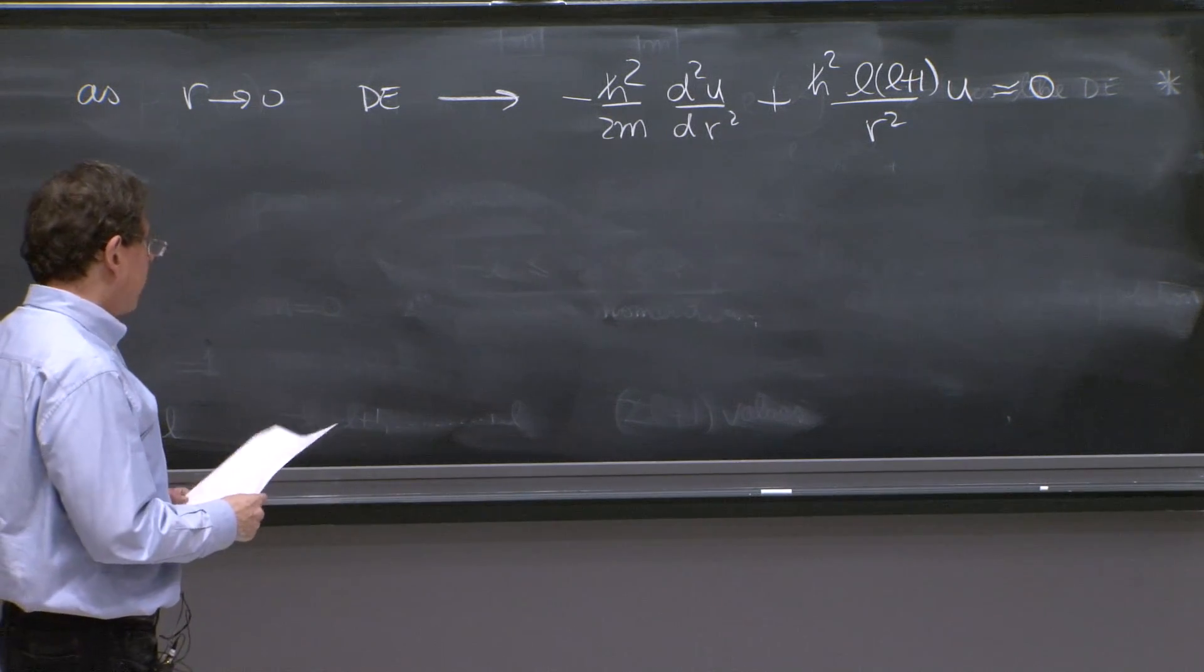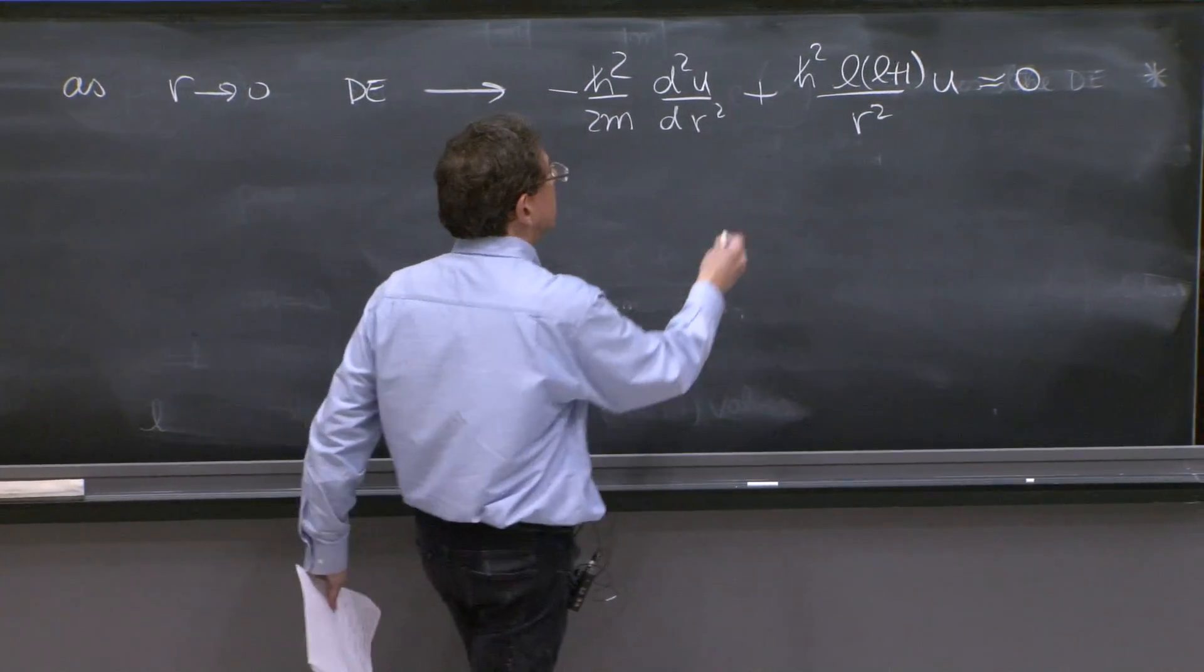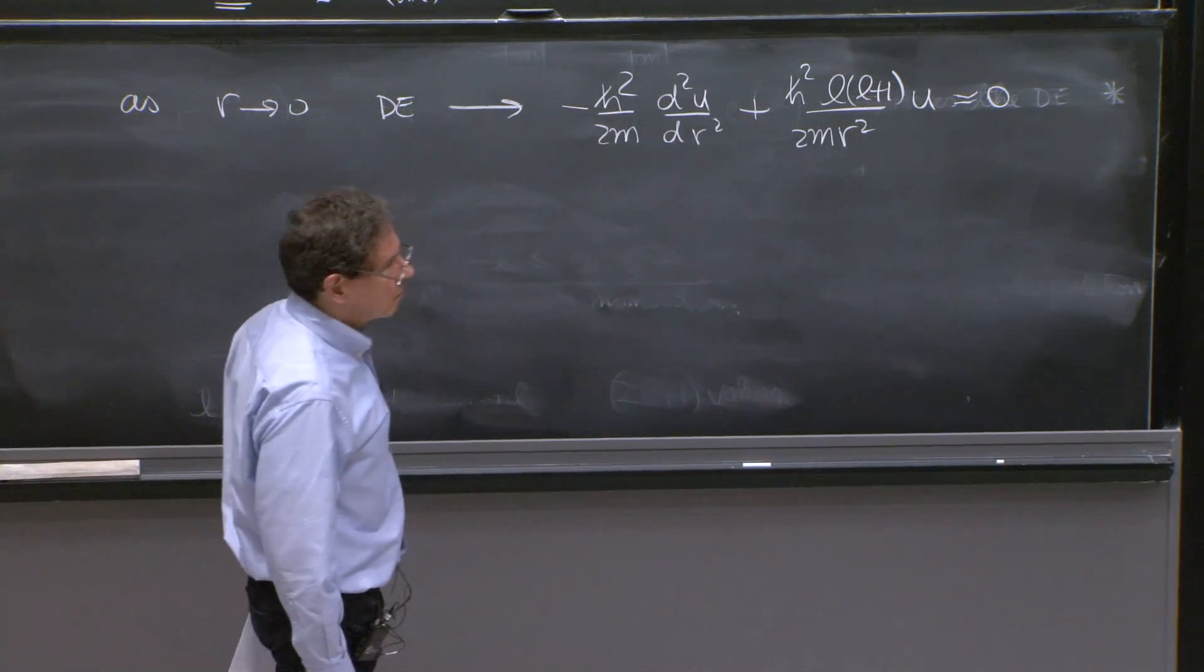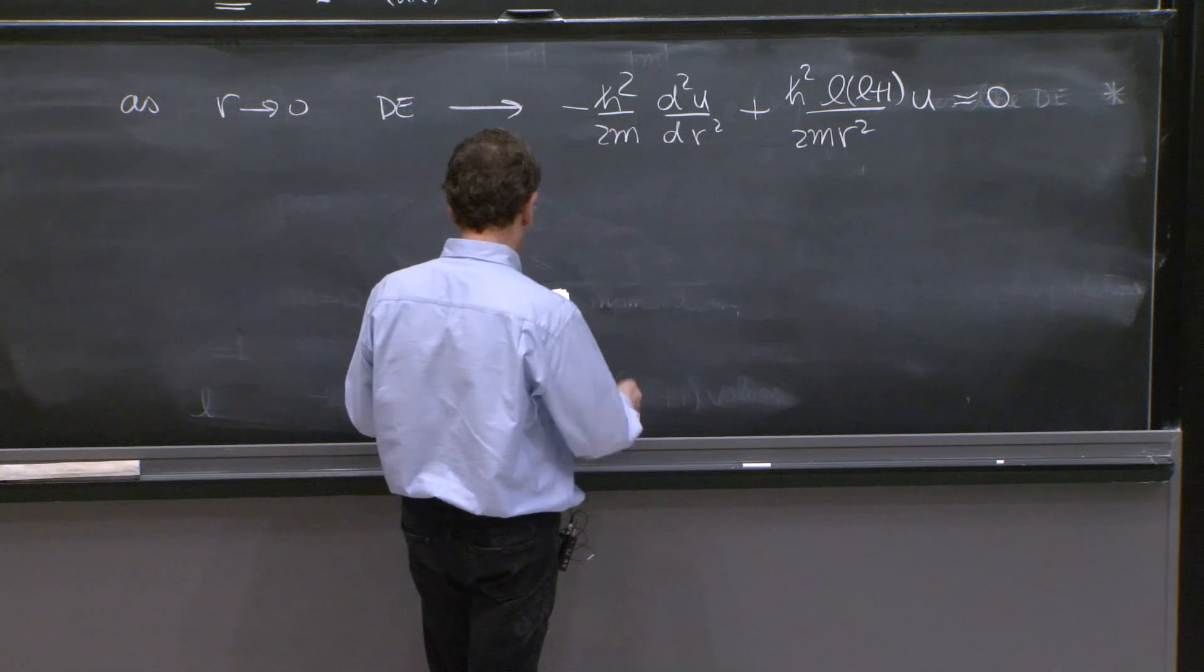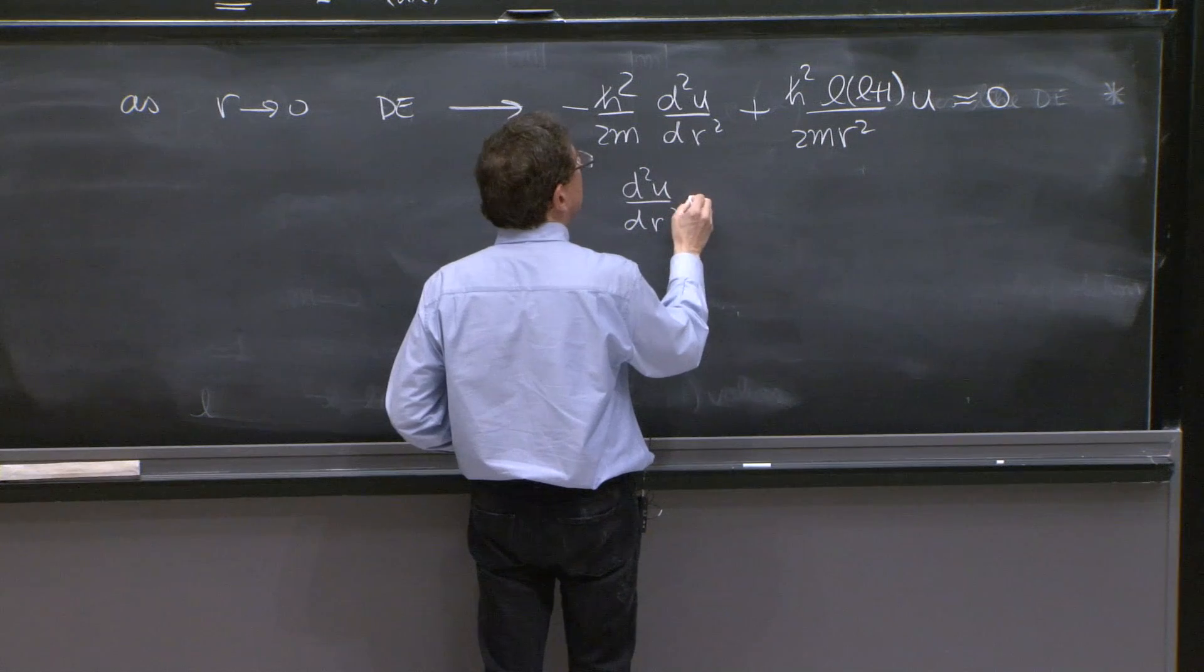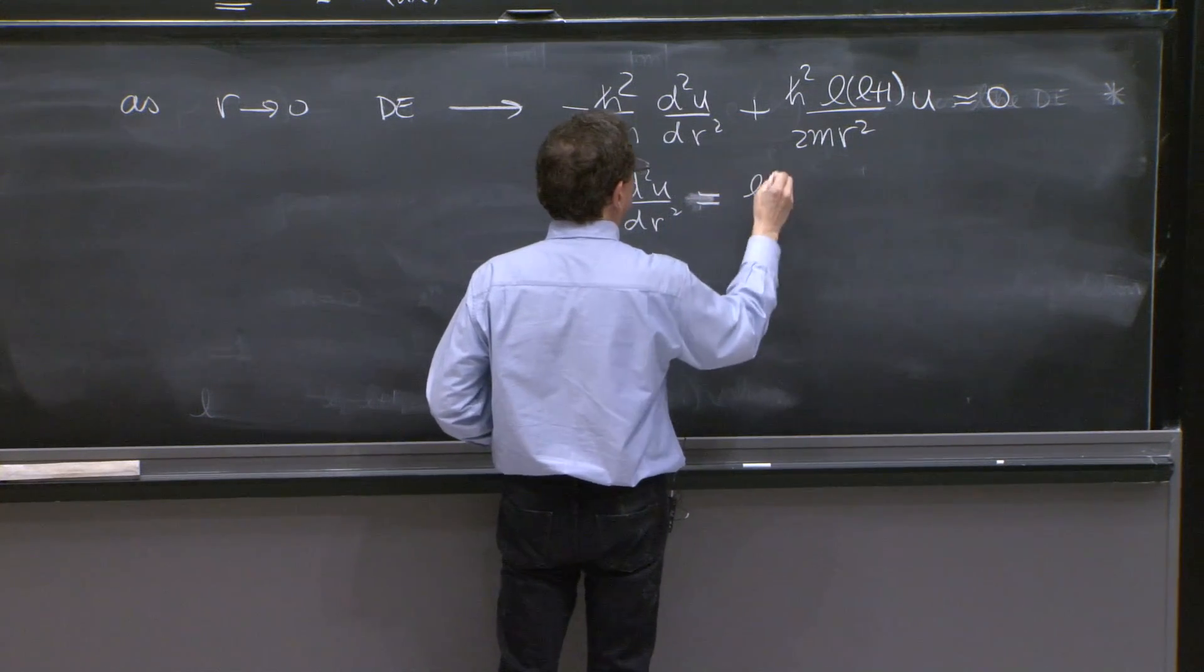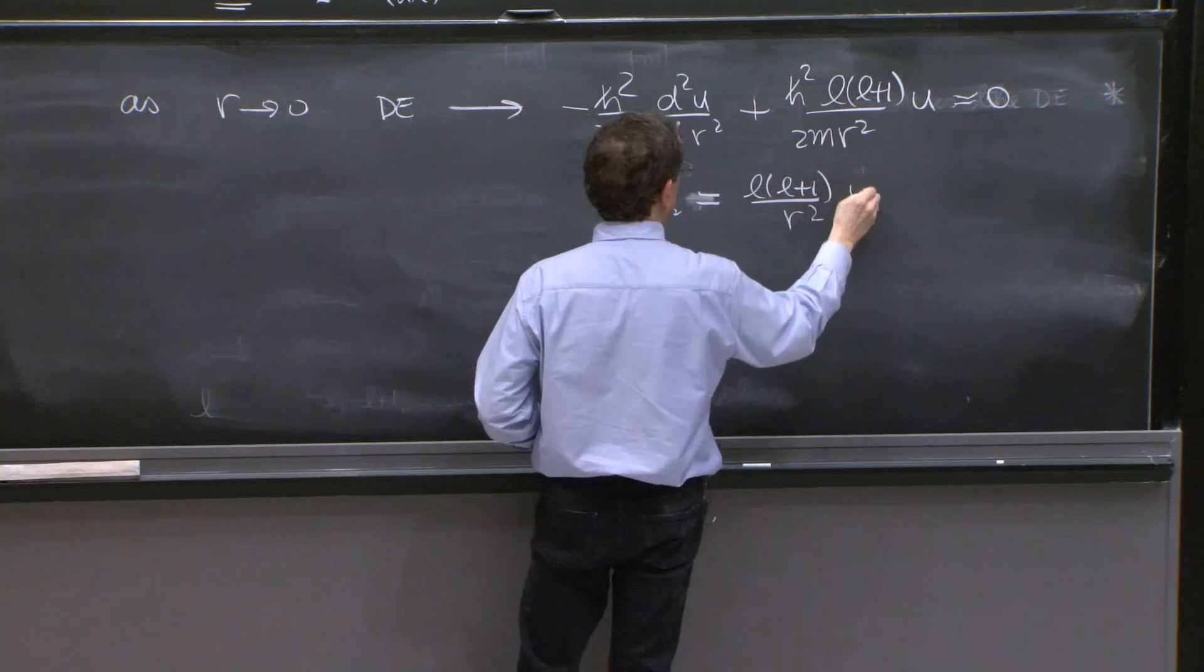At least the leading behavior of these things should work out correctly. So the ℏ squareds, oh, here is a 2m as well, I'm sorry. The ℏ²/(2m) cancel, and you get d²u/dr² is equal to l(l+1)/r² u.